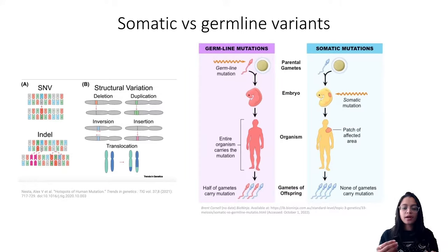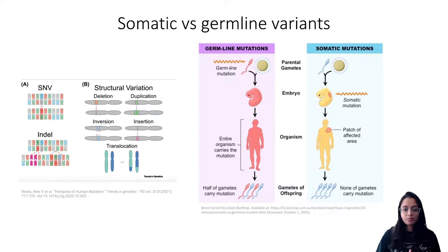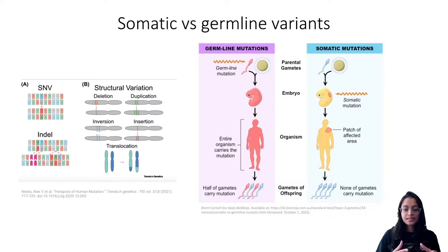One criterion that determines the steps you perform in a variant calling analysis is whether you want to call germline or somatic mutations. Germline variants are inherited from the parents via the germ cells — the sperm and the oocyte. Somatic mutations are acquired but not inherited. For example, if a variant is present in a stem cell in an infant, all cells derived from that stem cell will have that variant, but it will not be present in all other cells.